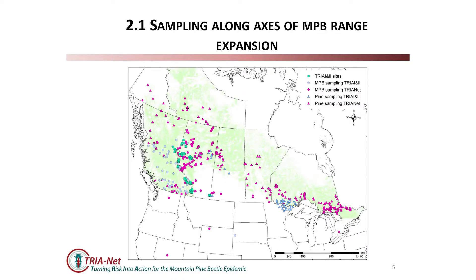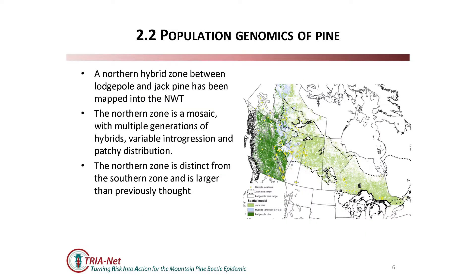The first objective was really to expand our sampling, and this is important because the focus of the last five years has really been on what's happening at the leading edge - this is where a lot of the sampling has been focused. The goal here was to really sample in areas where the beetle is currently expanding, cover areas like the north which we haven't done much with, and try to map the hybrid zone in pine. The pink dots here show where we've expanded sampling over the last five years.